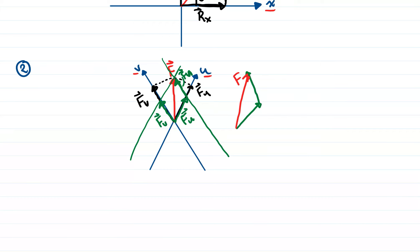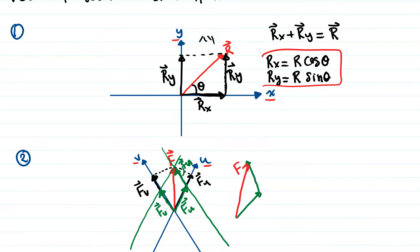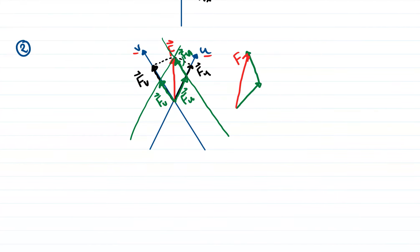The difference between example two and example one is that in example one we use the formulas r cosine theta and r sine theta to find rx and ry because we are dealing with a right triangle. In example two we are not dealing with a right triangle, so we use the cosine law and the sine law, and something called the parallelogram theorem. This is used a lot in chapter two of engineering statics.